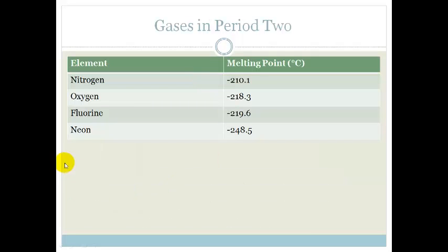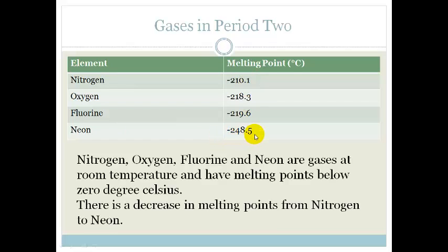Now let's look at the table of the gases in period 2. And now you see we're going from nitrogen through to neon. We go from minus 210 degrees Celsius, that's really cold, through to minus 248.5 degrees Celsius. So nitrogen, oxygen, fluorine and neon are gases at room temperature, but their melting points are very low and they decrease in melting point from nitrogen through to neon.